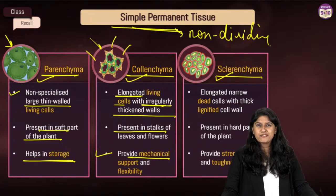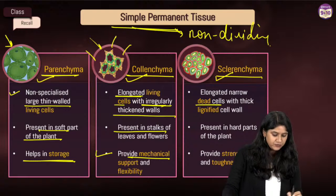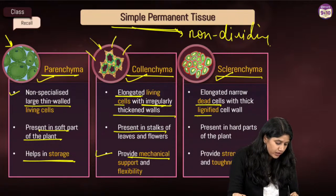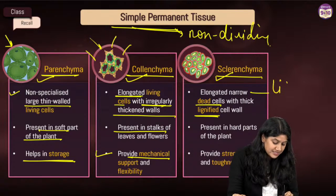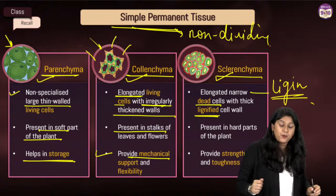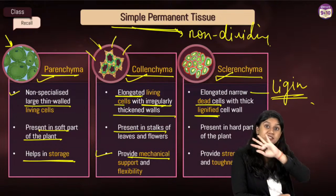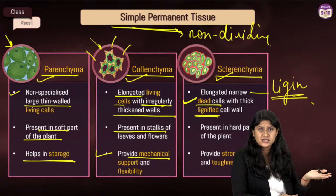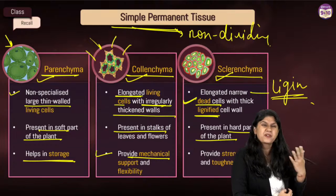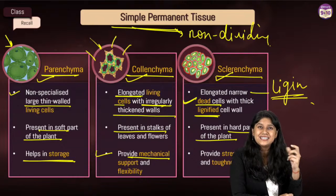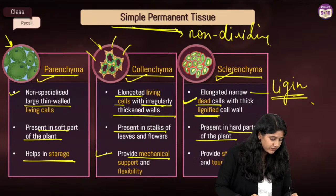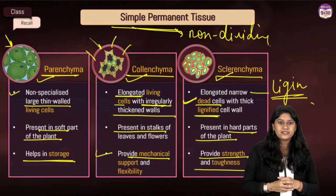Last but not the least, we have sclerenchyma. They are dead cells — elongated, narrow cells with a very thick cell wall covered by a chemical called lignin. Because of this chemical covering on the cell wall, we call them dead cells. They provide the hard parts of the plant and are usually found in the hard parts like seeds and the covering of coconut or nuts.